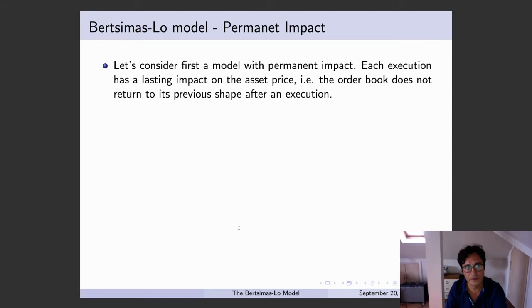So we start very simply with a model of permanent impact. So each execution, we're going to have an impact which is going to last forever. So if you think in terms of the order book, we sort of mentioned it earlier, and we're going to come back to this concept of the book all over again.